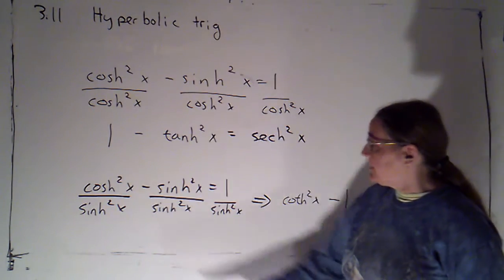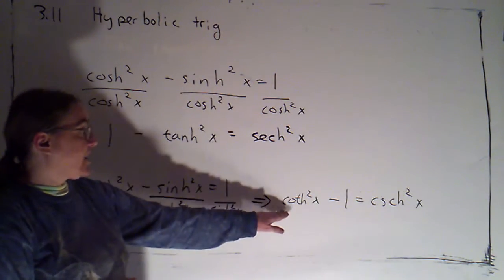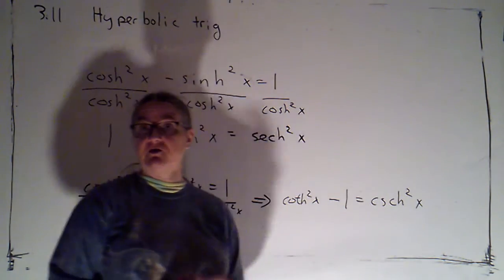I've got that worked out here. I just divide it through by sinh squared. And then when we simplify, we get coth squared minus one equals csch squared.